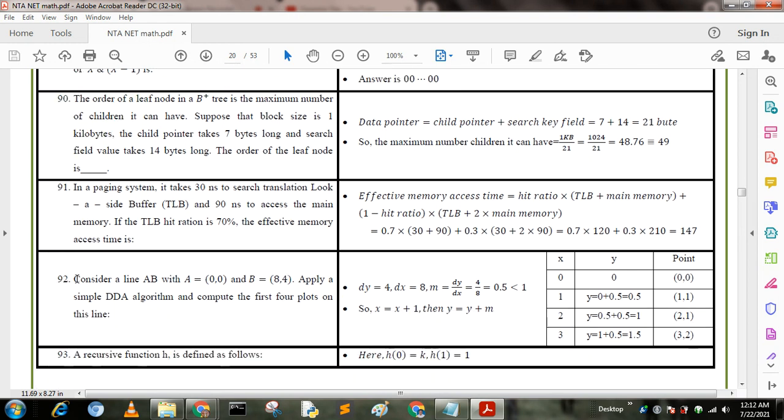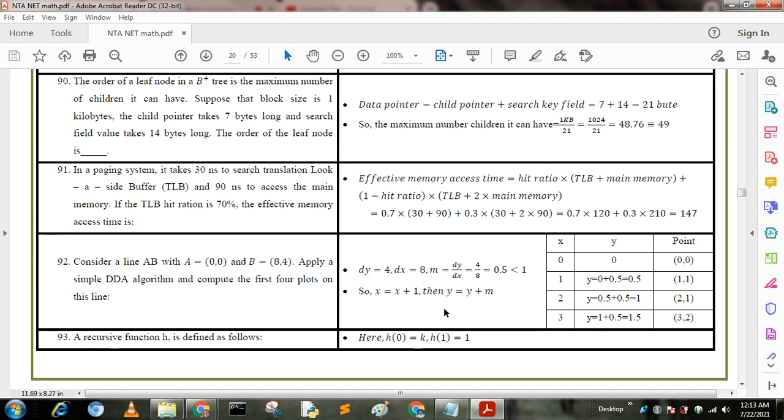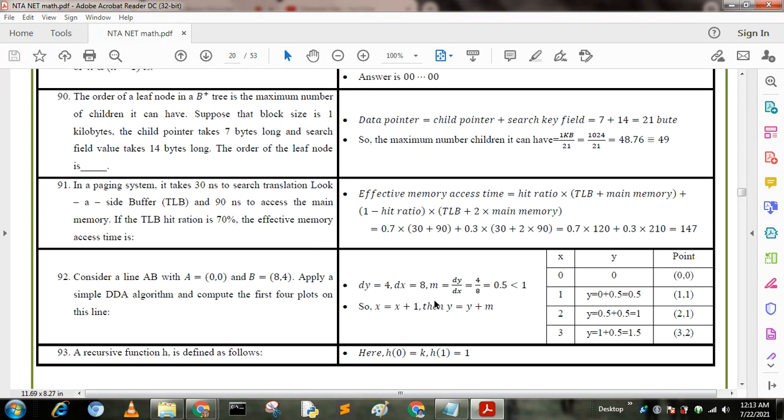Next question: consider line AB with A equals (0,0) and B equals (8,4). Apply simple DDA algorithm, digital differential analysis algorithm, to complete the first four plots on the line. We know that DY equals 4, that is 4 minus 0, and DX equals 8, that is 8 minus 0. And M equals DY by DX equals 4 by 8 equals 0.5, less than 1. So X equals X plus 1, then we know that Y equals Y plus M. After that we calculate X value. For X equals 1, we get Y equals 0.5, that is (1,1). Then X equals 2, we get (2,1). And X equals 3, we put 1 plus 0.5 equals 1.5, that is (3,2). If you want more videos, kindly subscribe and press the bell icon.